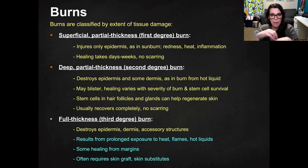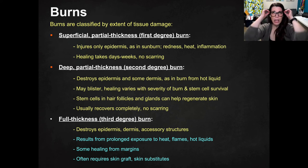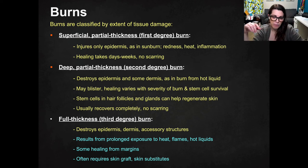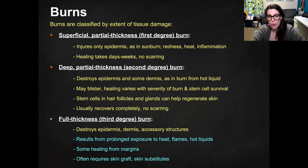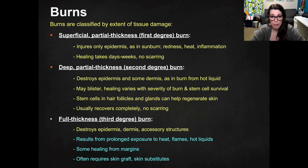Stem cells are found in the hair follicles and glands and can help regenerate the skin. If the glands, hair follicles, or accessory organs in the dermis weren't destroyed, you'll typically get recovery and regeneration of the skin — usually recovering completely with no scarring. Though as some of you know, blisters can sometimes still lead to scarring.